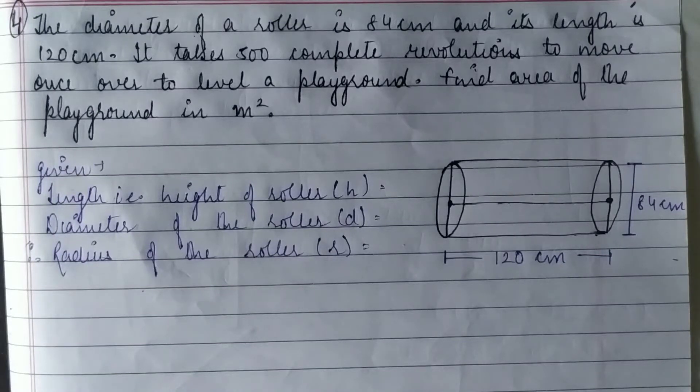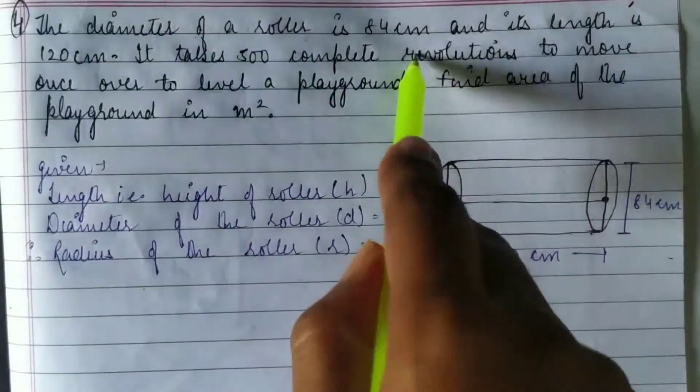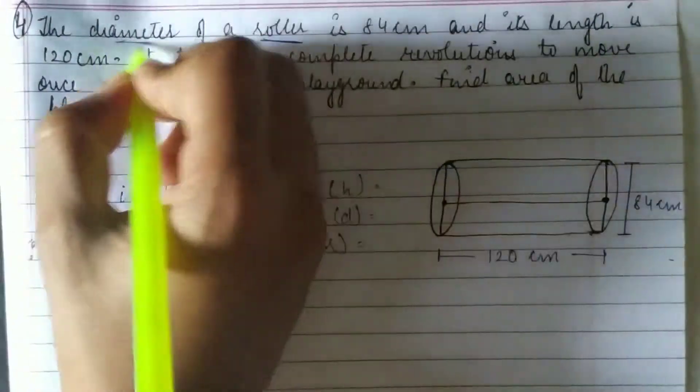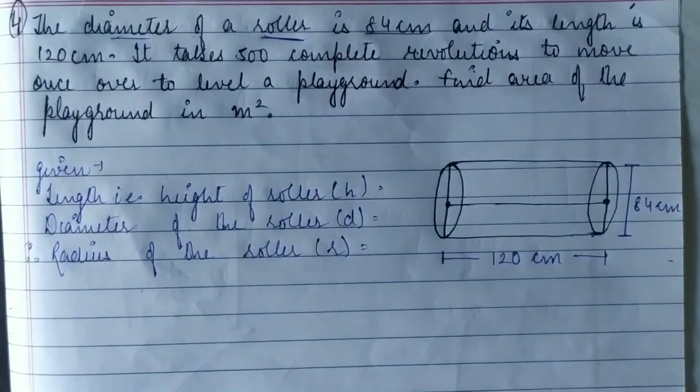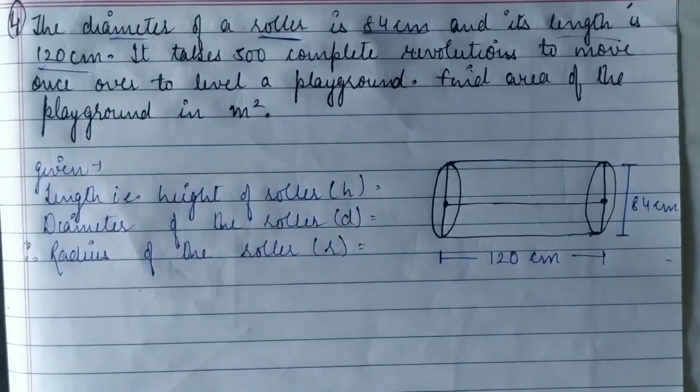So guys, moving on to the fourth question of exercise 13.2. The diameter of a roller is 84 cm and its length is 120 cm.